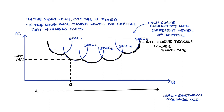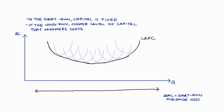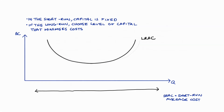Once we recognise that a firm can hold many different levels of capital, each associated with a unique short-run average cost curve, and even more short-run average cost curves, then once we take the lower envelope we get a much smoother long-run average cost curve, which is hopefully familiar to you from your textbooks. That was a short summary of finding our long-run average cost curve. I do have a longer video on deriving our long-run average cost curve that I'll link to below in case you need that extra detail.